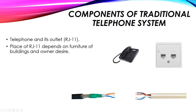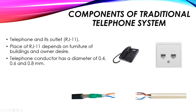The placement of the RJ11 telephone outlet depends on the furniture of the building and the owner's design. For example, in an office, the outlet should be placed next to each desk where a telephone exists. In our home, we can have more than one telephone on one line, using as many telephones as desired. The telephone conductor itself can have different diameters — 0.4, 0.6, or 0.8 millimeter — with 0.6 millimeter being the one most frequently used.